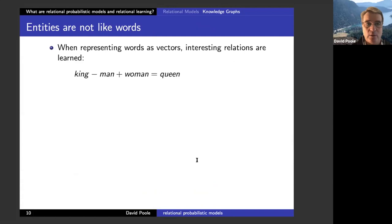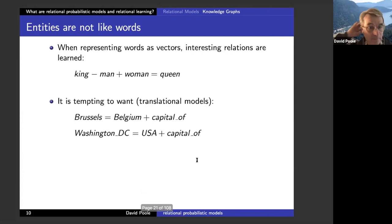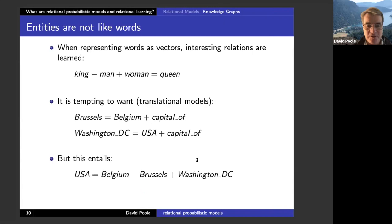Many machine learning people think entities are like words, and words can be represented as vectors — king minus man plus woman equals queen. So there are many translational models that say Brussels equals Belgium plus 'capital of,' and Washington DC equals USA plus 'capital of.' But this entails USA equals Belgium minus Brussels plus Washington DC, and I guarantee that if you know everything about Belgium, Brussels, and Washington DC, you won't be able to tell anything interesting about the USA. Words can have simple meanings, but almost all entities are multifaceted and complex — entities are much more complicated than words.